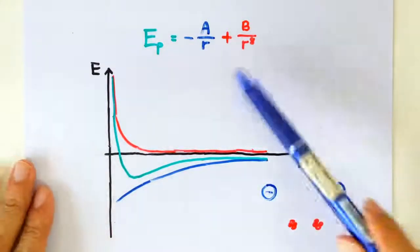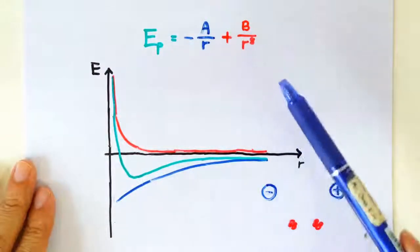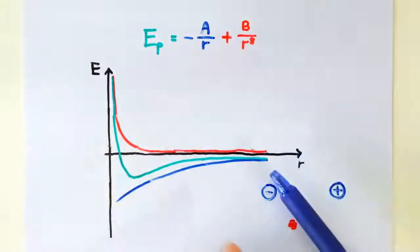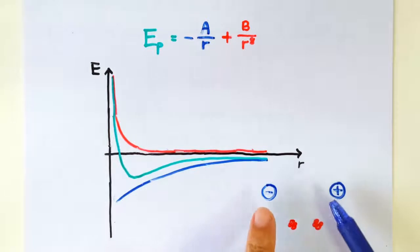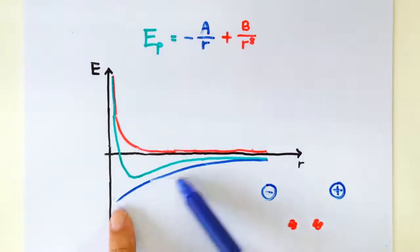Let me briefly explain how these two terms come about. When the two ions are very far apart, the main interaction is between the net charges of the two ions. So this is an attractive force. That's why we have this blue line here.